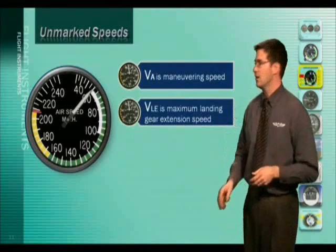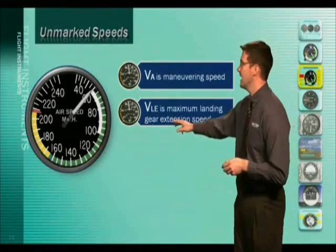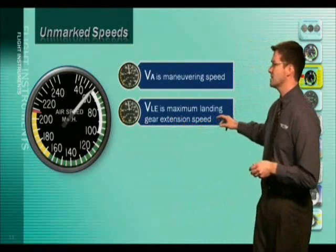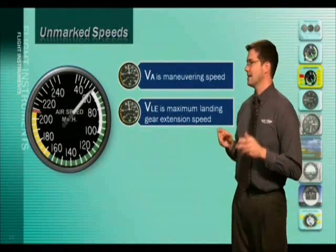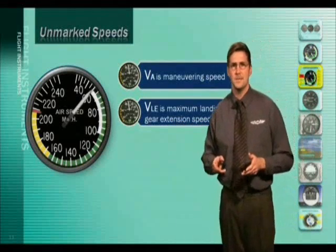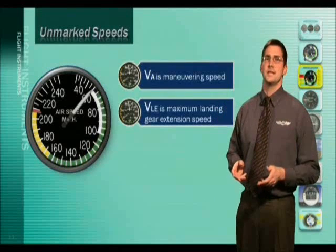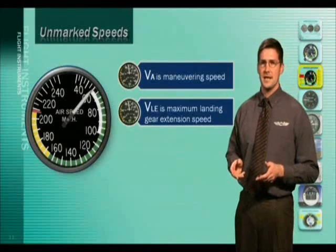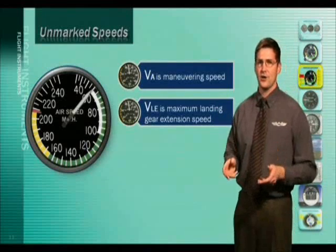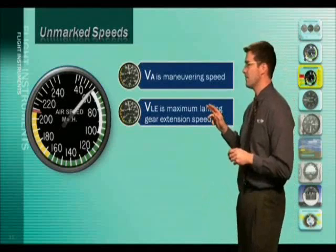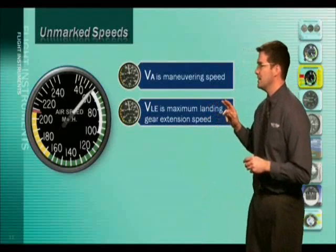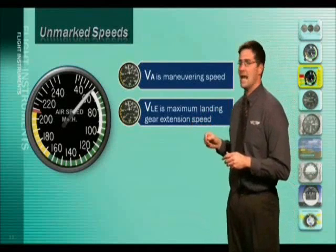Another airspeed limitation not depicted on the airspeed indicator is VLE, which is the maximum landing gear extension speed. This is the maximum speed at which you can safely lower the landing gear on an aircraft with retractable gear. Again, this speed is found in the pilot's operating handbook.